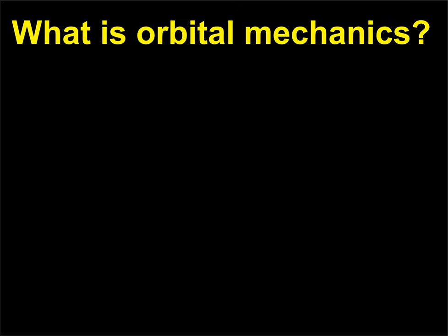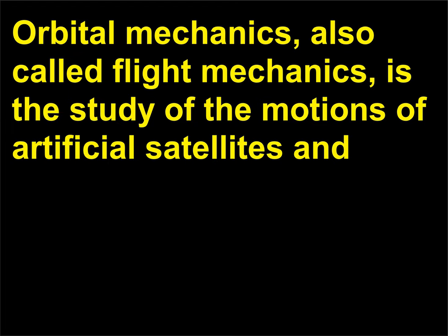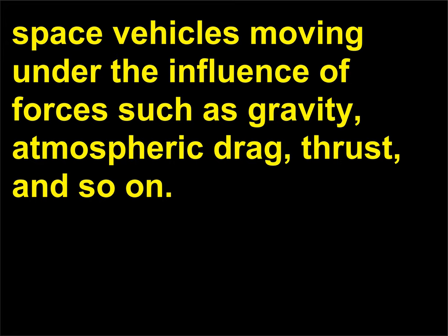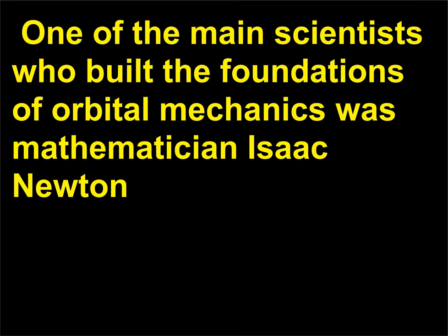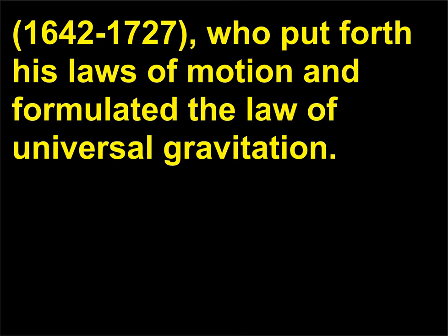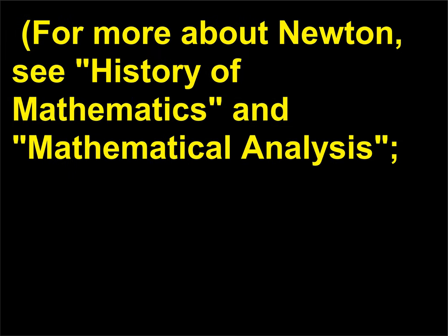What is orbital mechanics? Orbital mechanics, also called flight mechanics, is the study of the motions of artificial satellites and space vehicles moving under the influence of forces such as gravity, atmospheric drag, thrust, and so on. It is a modern spin-off of celestial mechanics, or the study of the motions of planetary and celestial bodies. One of the main scientists who built the foundations of orbital mechanics was mathematician Isaac Newton (1642–1727), who put forth his laws of motion and formulated the law of universal gravitation.